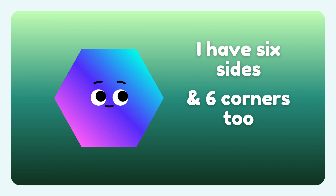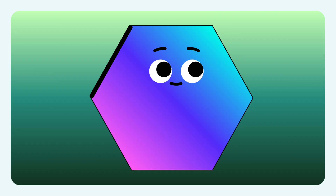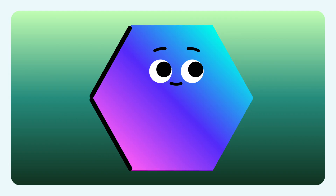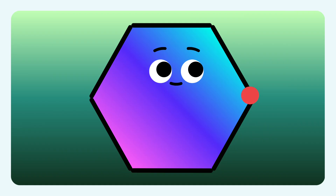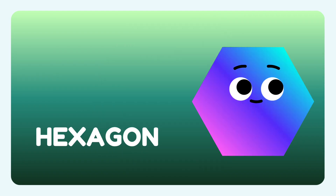I have six sides and six corners too. Let us see: one, two, three, four, five, and six. Now we see our six corners: one, two, three, four, five, and six. All six sides and six corners make me a hexagon. You can find me anywhere around your surroundings, like a honeycomb.